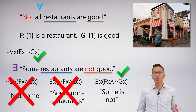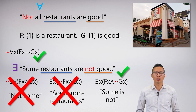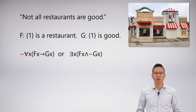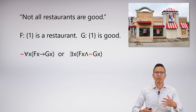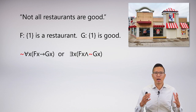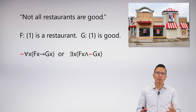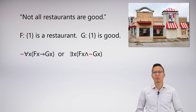If you're paying attention, you may have realized that 'not all restaurants are good' and 'some restaurants are not good' have the same meaning. So if I wanted to symbolize 'not all restaurants are good,' I could pick either of these symbolizations. This is what we're going to focus on today — how to deal with a negation and quantifiers like the universal or the existential.